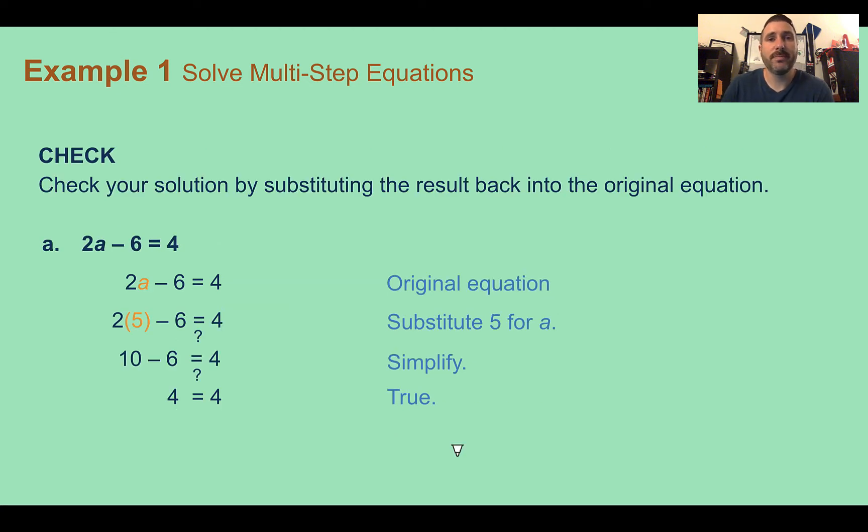As we're going through this, we should make sure we're checking our solution. So I'm going to plug 5 back into the original equation to see if it's a true statement. Instead of A, I'm going to substitute in 5. 2 times 5 is 10. If I subtract 6 from 10, I get 4. Does 4 equal 4? Yes, it's true. My solution was correct.